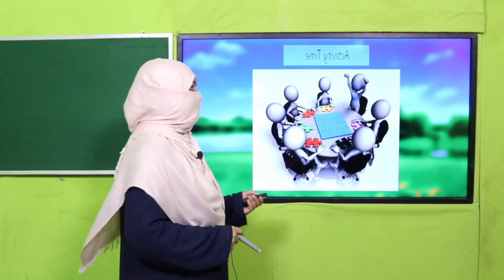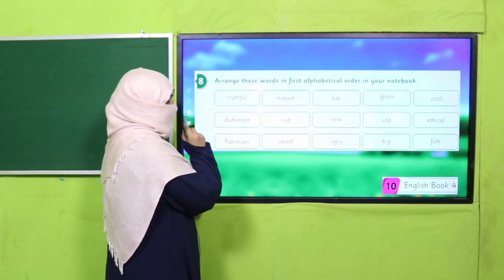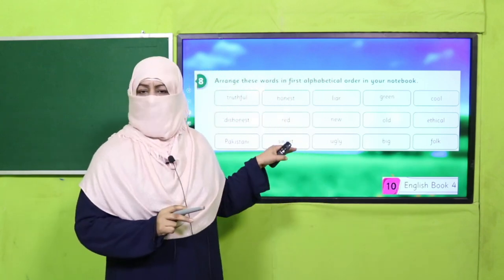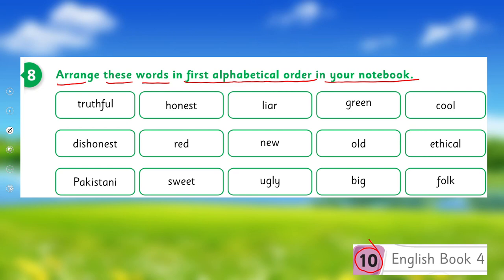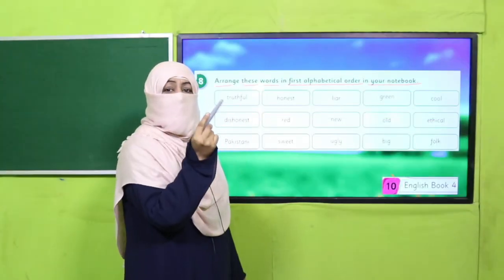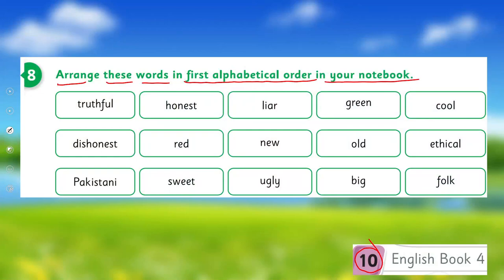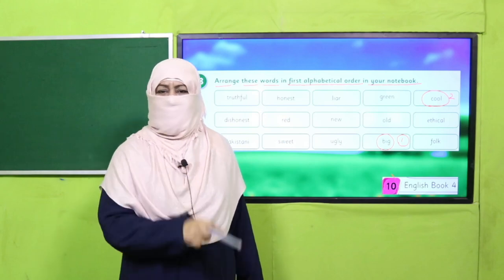Are you done? Good job! Next is a very interesting activity. All of you will arrange these words — they are on page number 10 of your book — in alphabetical order in your notebook. These words are in a different order than they should be. Read the first letter of each word and see what comes first in ABC. There is no word starting with A; the first is B, then C. Quickly arrange them in your notebook. Pause the video and enjoy this activity.